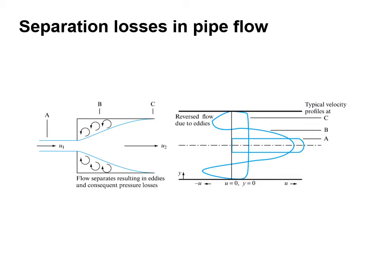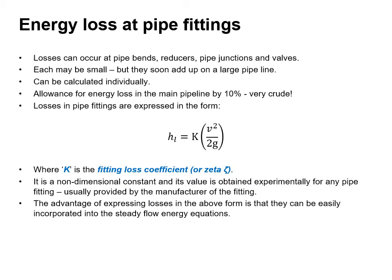The figure shows the flow separating, resulting in eddies, consequential pressure losses, and typical velocity profiles at positions A, B, and C. Losses can occur at pipe bends, reducers, pipe junctions, and valves. Each may be small but they soon add up in a large pipeline. They can be calculated individually, or sometimes an allowance for energy loss over an entire pipeline may be given a value of say 10% — though this is a bit crude.